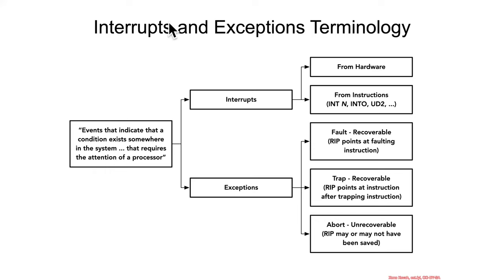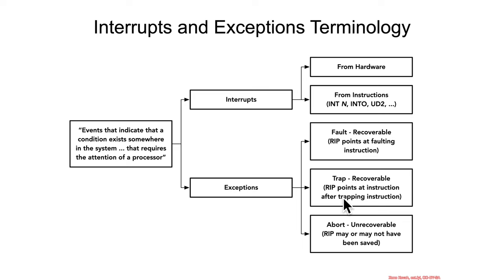As a reminder of the taxonomy of conditions that exist on the system requiring the processor's attention: we had interrupts from hardware and instructions, and exceptions — which were the fault, where the RIP points at the faulting instruction, and the trap, where the RIP points at the instruction after the trapping instruction.